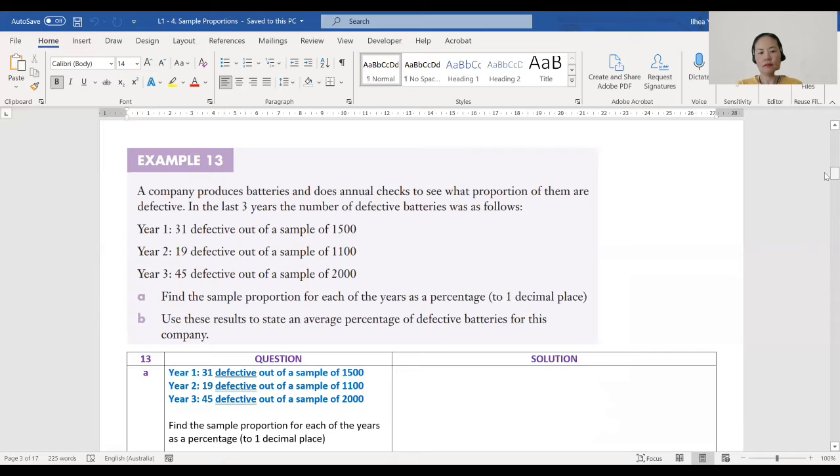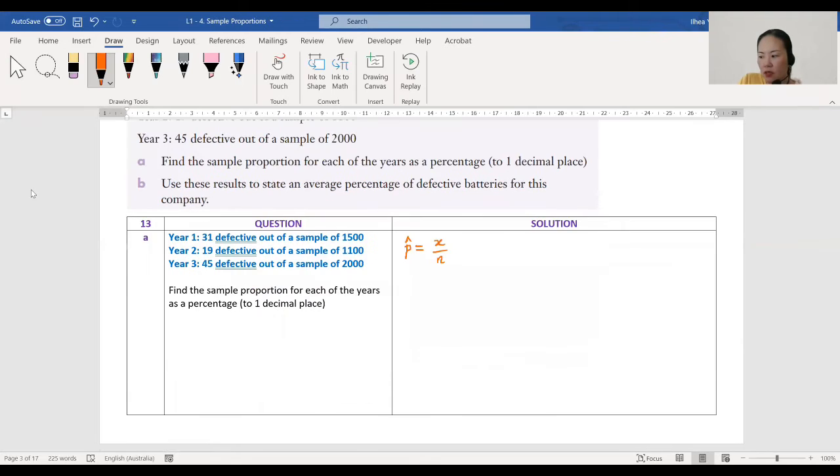Find the sample proportion for each of the years as a percentage to one decimal place. Use these results to state an average percentage of defective batteries for this company. What do we have to do? Just basically use the formula p hat equals x over n. What is my x? What is my n? Well, that's my n, the total sample numbers, and this is x.